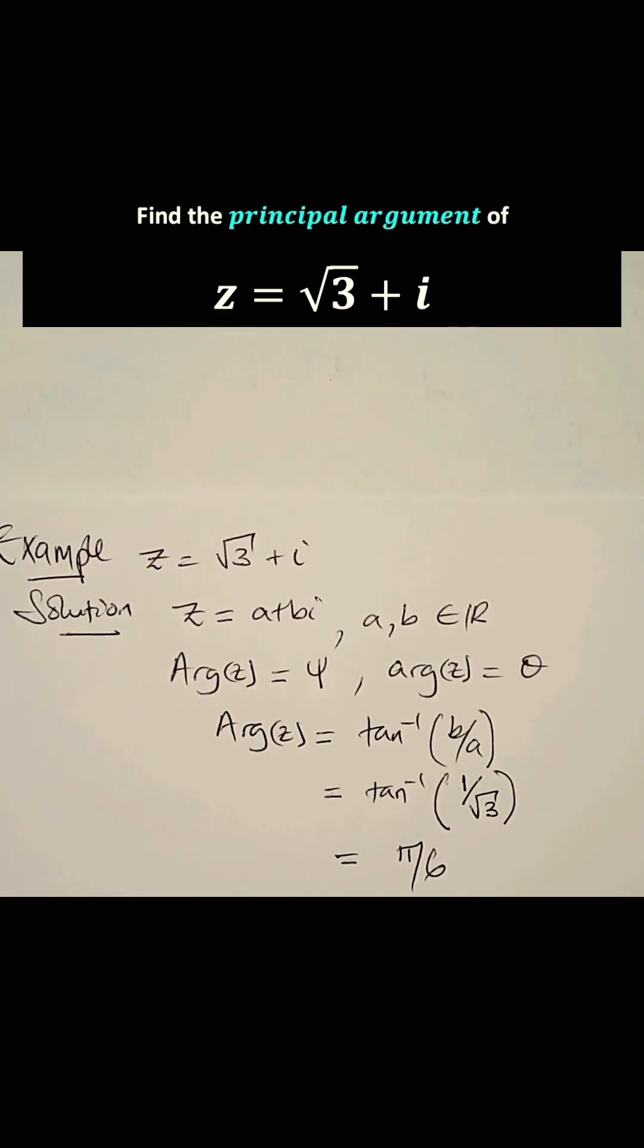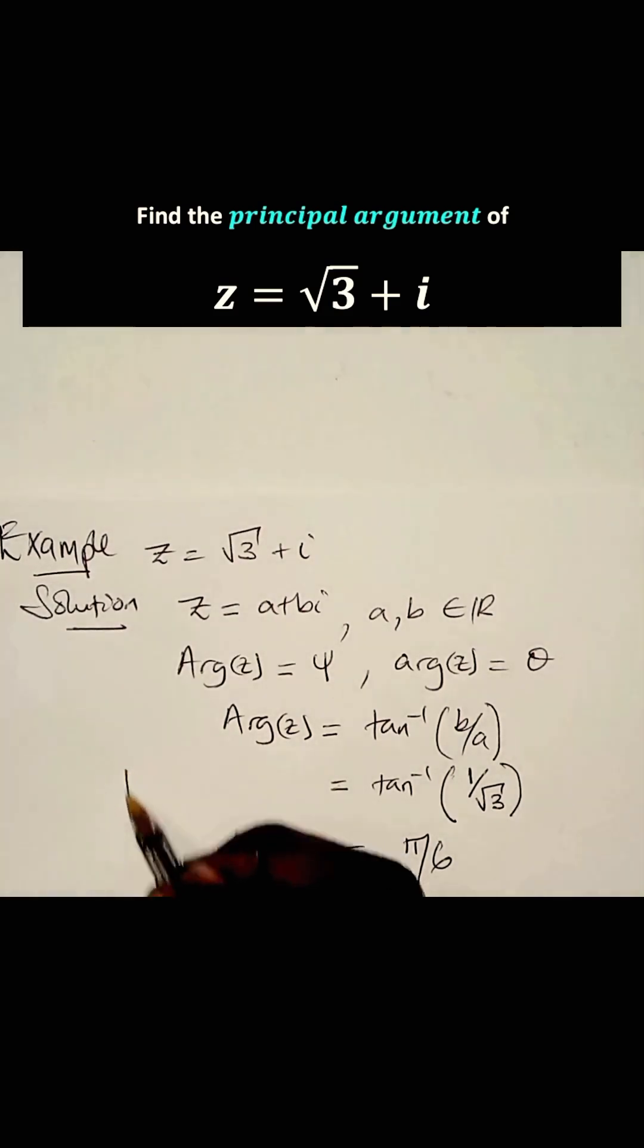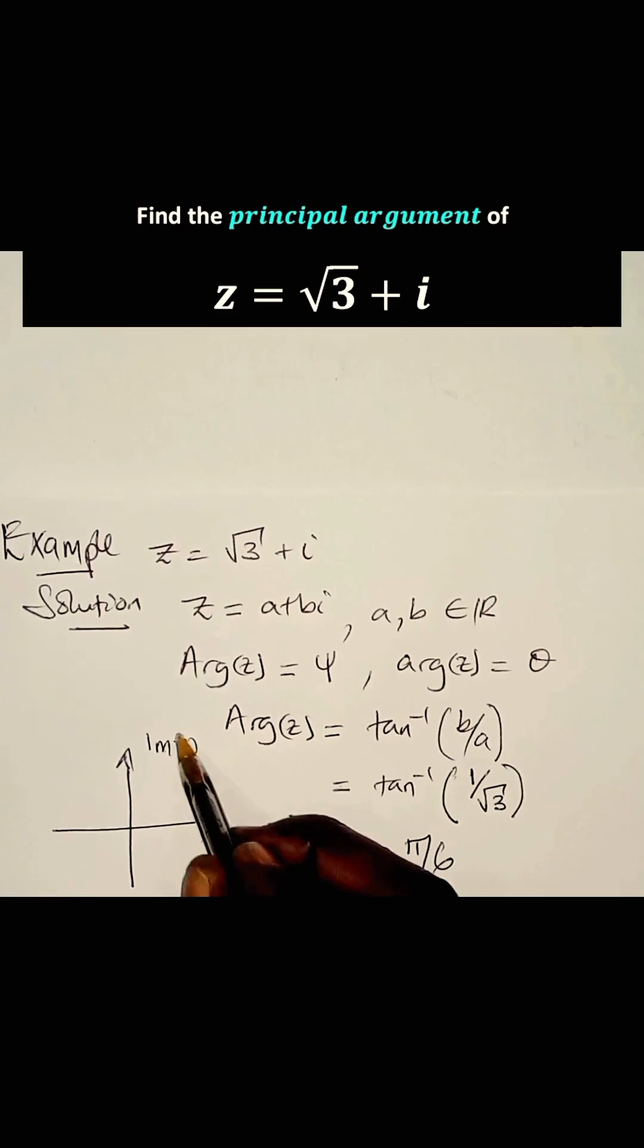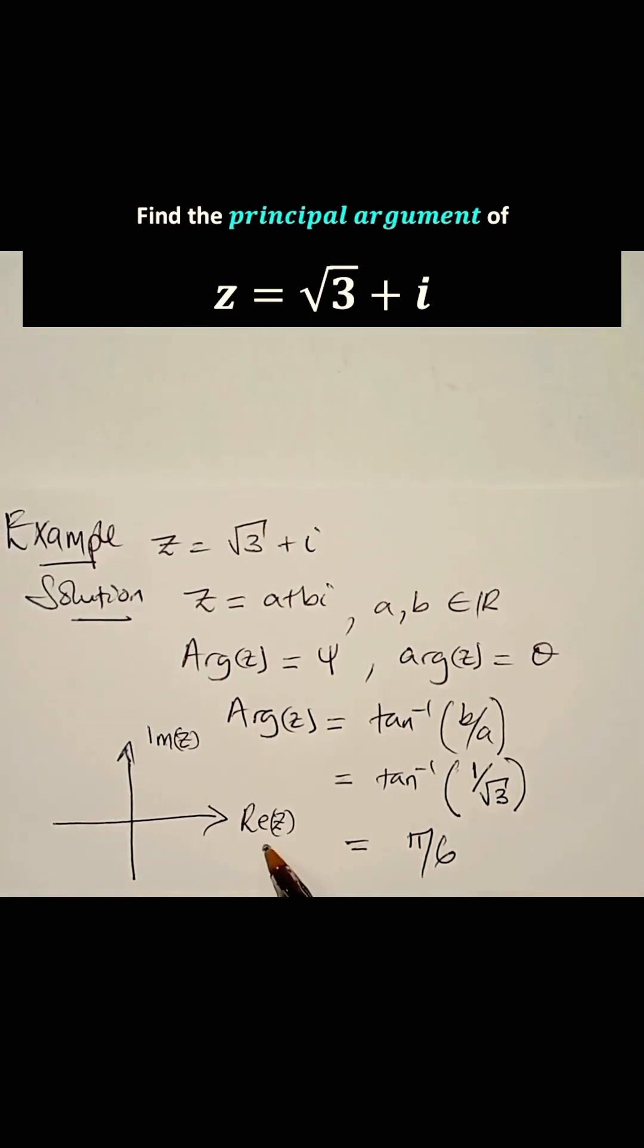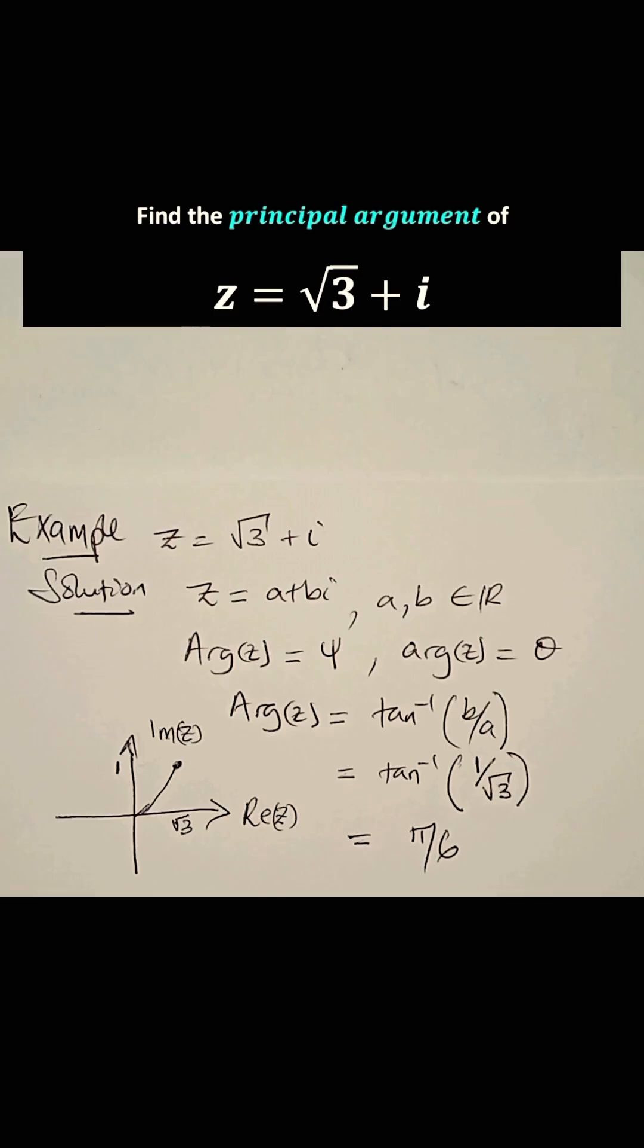Now, to find the principal argument, we must know which quadrant the Argand diagram for this complex number lies in. I'll just write the Argand diagram right here. We have the imaginary part of Z for this axis, and we have the real part of Z on that axis. We have root 3 on the real part axis, and we have 1 on the imaginary axis. So we have a point where they meet. That's the Argand diagram for this complex number. You realize that the Argand diagram lies in the first quadrant.